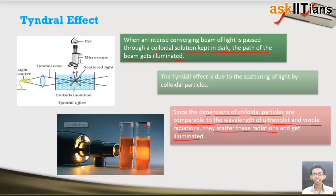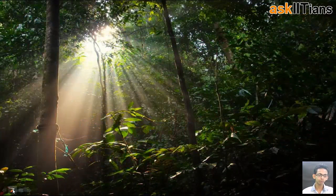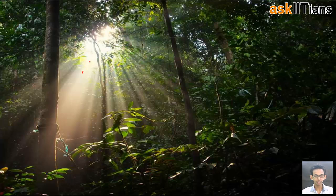What are the examples of the Tyndall effect? You may have seen the blue color of the sky — that is basically because of the scattering of blue light in the atmosphere by particles of air which are of colloidal size. The next example is a phenomenon you must have observed: whenever light comes through the leaves of a tree, its path gets visible and very small tiny dust particles can be seen moving within the path of that light.